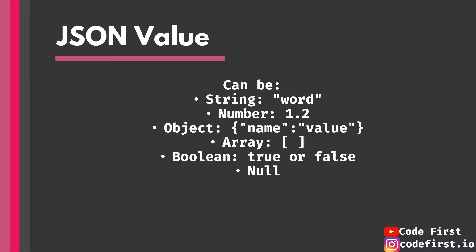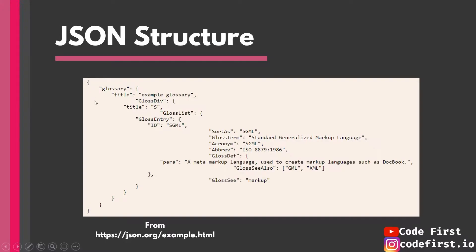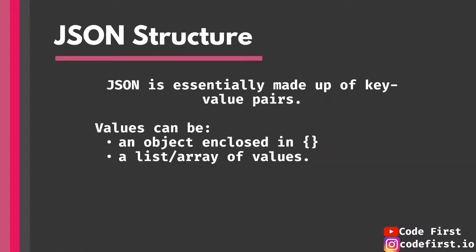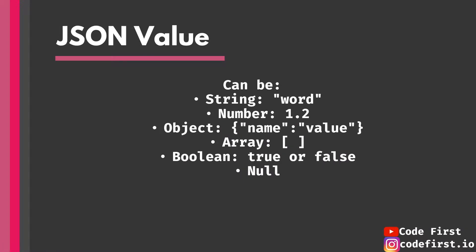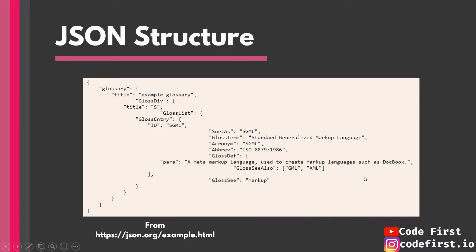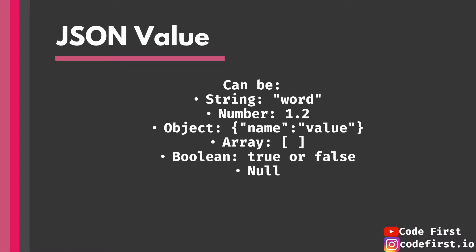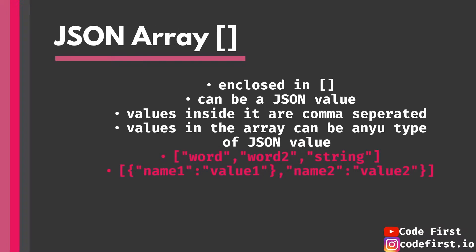What are JSON values? A value can be a string — a word or series of characters. It can be a number — floating point or integer. It can be an object enclosed in curly braces with key-value pairs inside. Looking back at the example, 'glossary' has an object for its value, with more objects nested inside it. You can go very deeply nested with JSON. A value can also be an array, a boolean (true or false), or null. Those are all the possible JSON value types.